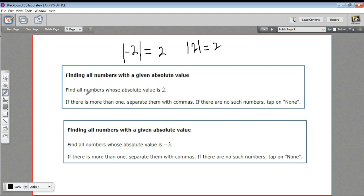So in this question, when it says find all numbers whose absolute value is 2, well, that's going to be 2 and negative 2, just as we saw up there.